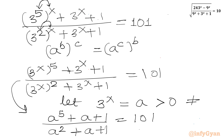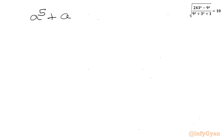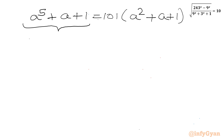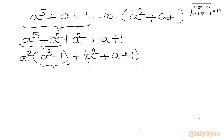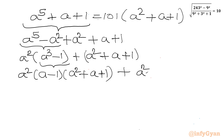So our equation becomes (a^5 plus a plus 1) divided by (a^2 plus a plus 1) equal to 101. Since a cannot be 0, I can cross multiply, giving a^5 plus a plus 1 equal to 101(a^2 plus a plus 1). Now I will simplify the LHS. I will write a^5 minus a^2 plus a^2 plus a plus 1. From the first two terms, a^2 is common, giving a^2(a^3 minus 1), followed by plus a^2 plus a plus 1.